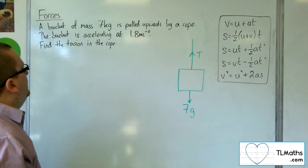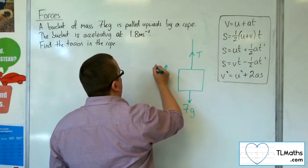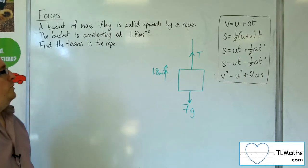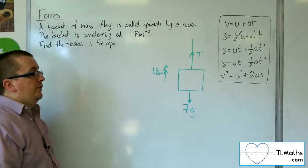It's accelerating at 1.8 metres per second squared. So there's acceleration, we've got the tension, we've got 7g. We're asked to find that tension, the value of T.